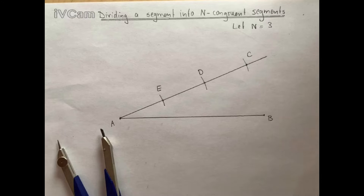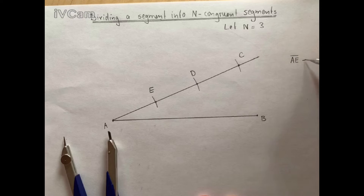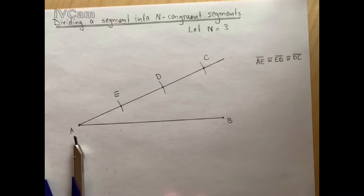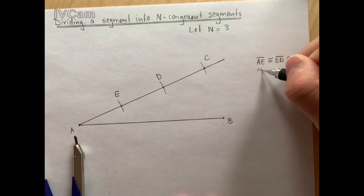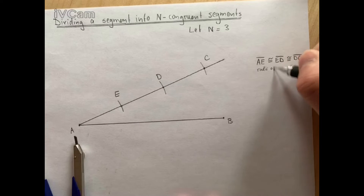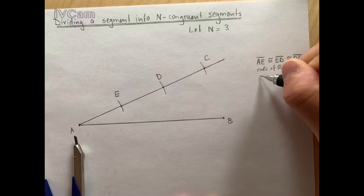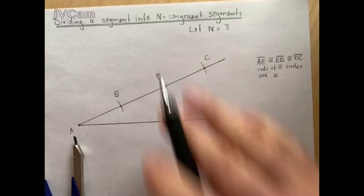Now we know for sure that these segments are all congruent. Let's label these points: this is point C, this is point D, and this is point E. So we know that segment AE is congruent to segment ED and congruent to segment DC. The reason is that radii of congruent circles are congruent — and that's exactly what we just did with the compass.